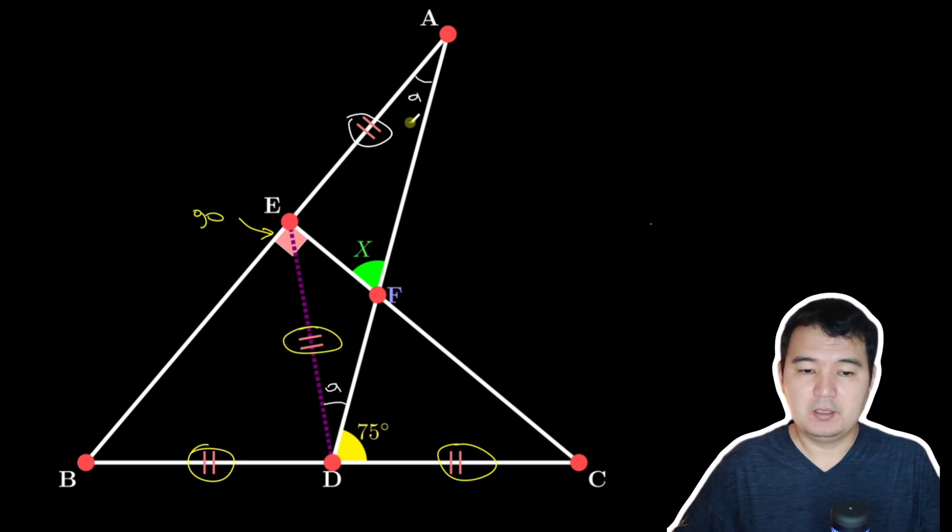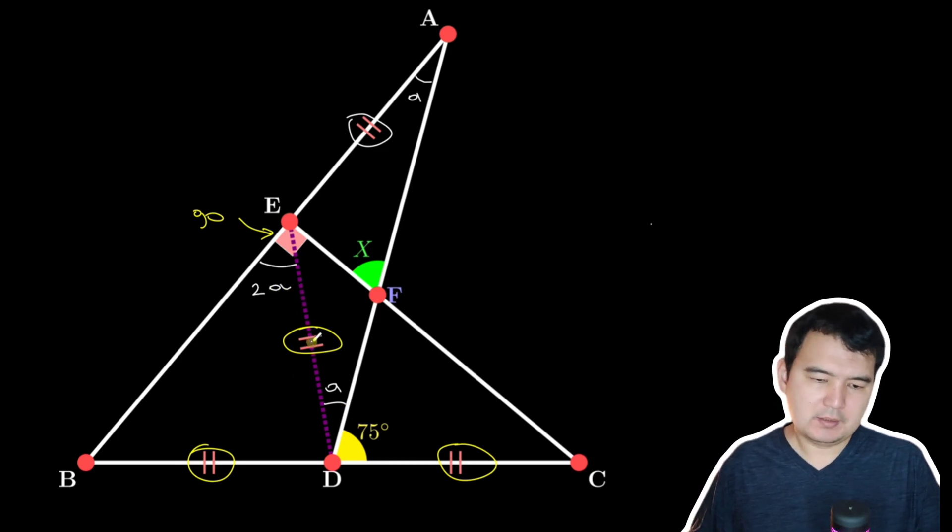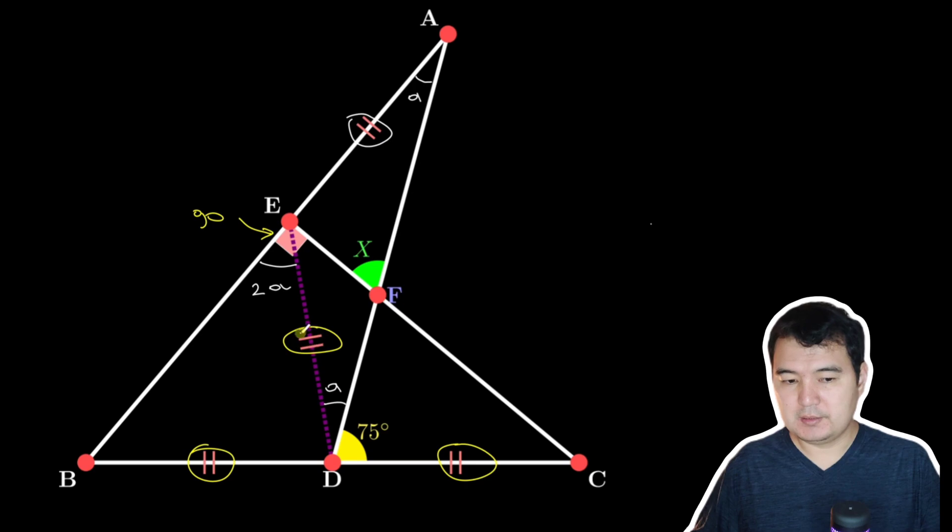The sum of two interior angles will be 2A here. And looking at this isosceles triangle, we have 2A as well.